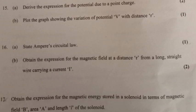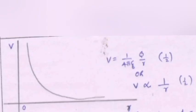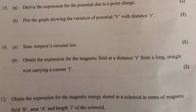Question 15A: Derive the expression for the potential due to a point charge. Part B: Plot the graph showing the variation of potential V with distance R. Draw the graph: V equals 1 by 4πε₀ times q by R.